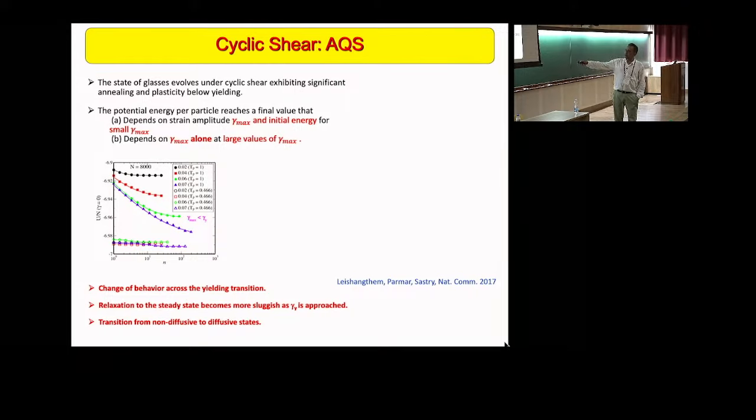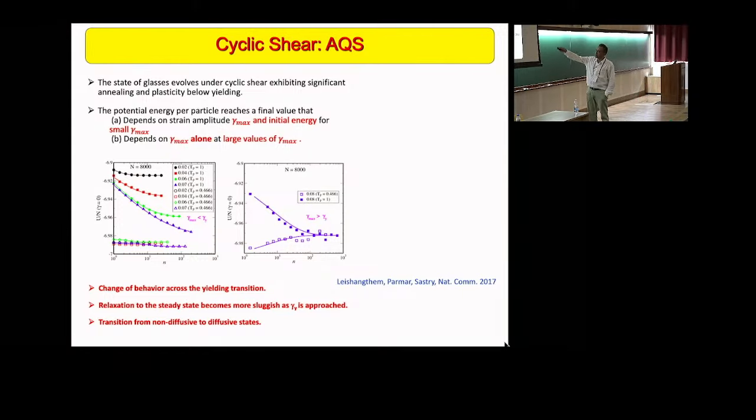For the same set of strain amplitudes, if I were to start with a lower energy as the initial energy of the glass, then its behavior is very different. The final state that I reach remembers the initial state. In contrast, if I now increase the strain amplitude beyond these values - this went up to 7% - if I go up to 8%, now the final energy reached doesn't depend on where I start anymore. So there's some form of ergodicity. Unlike these initial strain values where with increasing strain the energy decreased, with increasing strain the energy now increases.